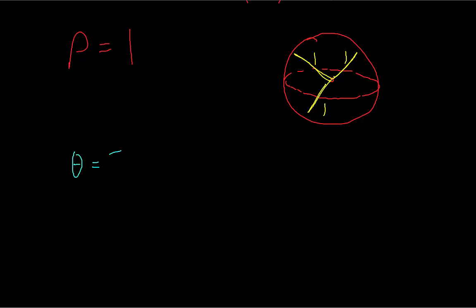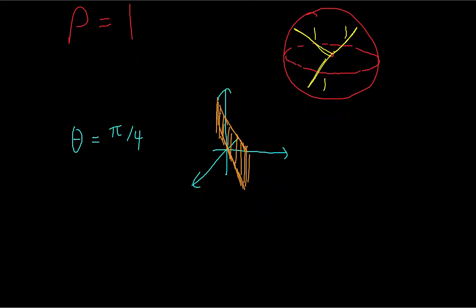The equation theta equals pi fourths would be a plane situated at an angle of pi fourths from the x-axis. Just like how in polar coordinates, if we have theta equals something, that's the equation of a line.